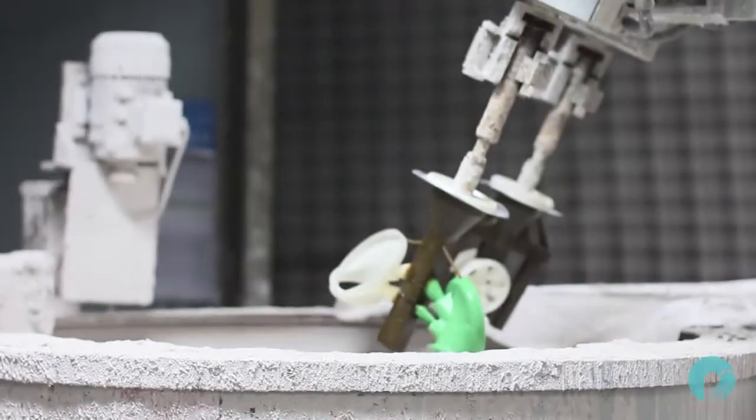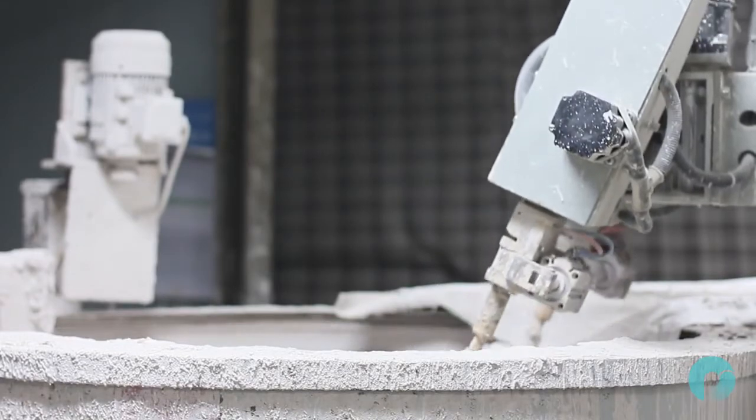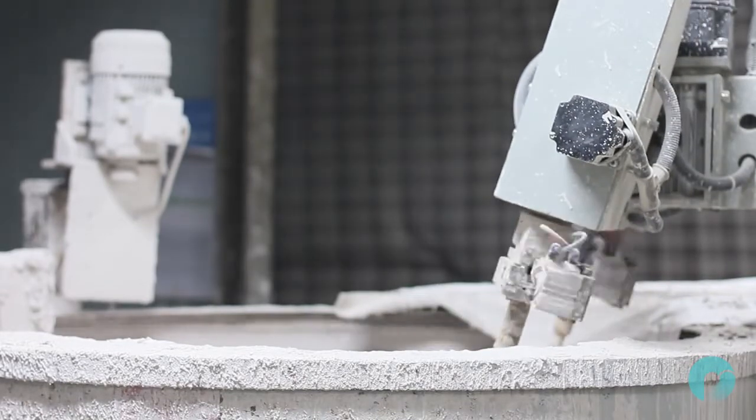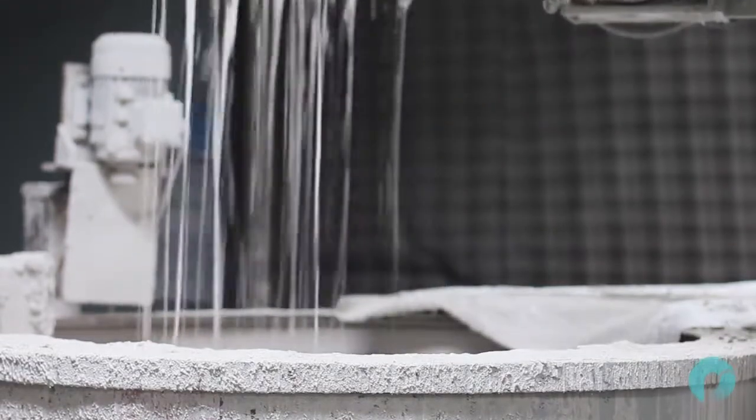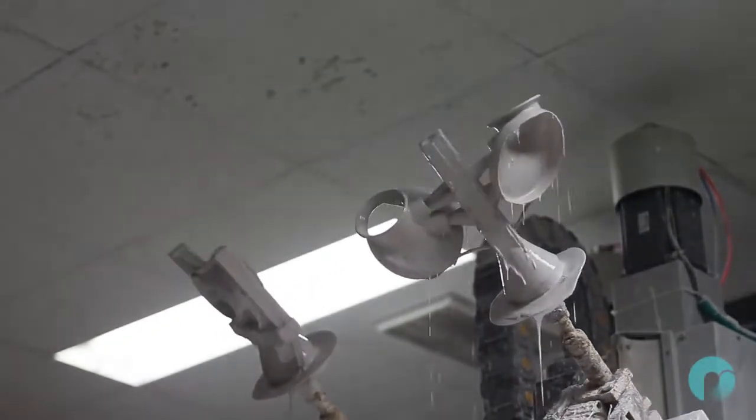Now the investment molds can be built up. First, the Polycast parts are dipped in a ceramic-based slurry. This foundry uses a fully automated molding system that rotates the parts for an even coating.